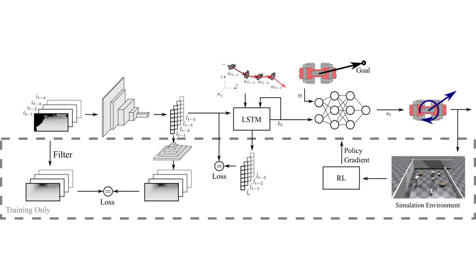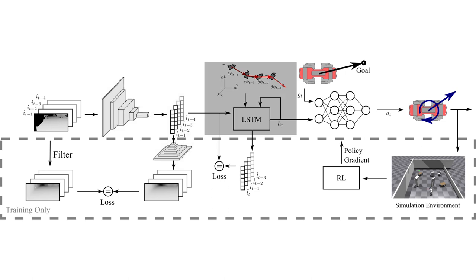Let's look at the pipeline. The stream of depth images is first encoded to a low-dimensional latent space using a variational autoencoder. These latent vectors are fed through an LSTM along with the camera's trajectory to produce a hidden state vector h. Since the LSTM is trained to predict future depth frames, its hidden state represents the belief state of the world.